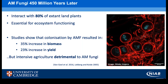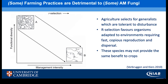It is also well documented that intensive agriculture, such as long fallow periods, high nutrient applications and cultivations, can be detrimental to populations of AM fungi. However, Verbruggen and Kiers 2010 suggested that actually some farming practices can be detrimental to only some AM fungi, and that agriculture selects for generalists which are tolerant to disturbance — species adapted to environments requiring fast, copious reproduction and dispersal. These species may be well suited to their environment, but may not be well suited to providing plants with nutrients and benefits.